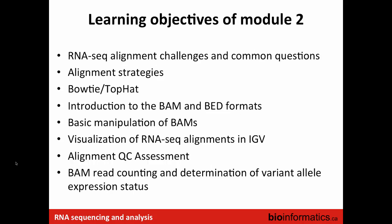In this module the focus is to look at some of the challenges that we face when we deal with RNA-seq alignments. What are some of the alignment strategies that are available? We will be focusing on Bowtie and TopHat and go over how these tools work. After that we'll go over the output files from the alignments, the BAM and BED formats. For those not familiar with those formats, we'll go through what they look like, how you can manipulate them, and what you can do with them for further downstream analysis.